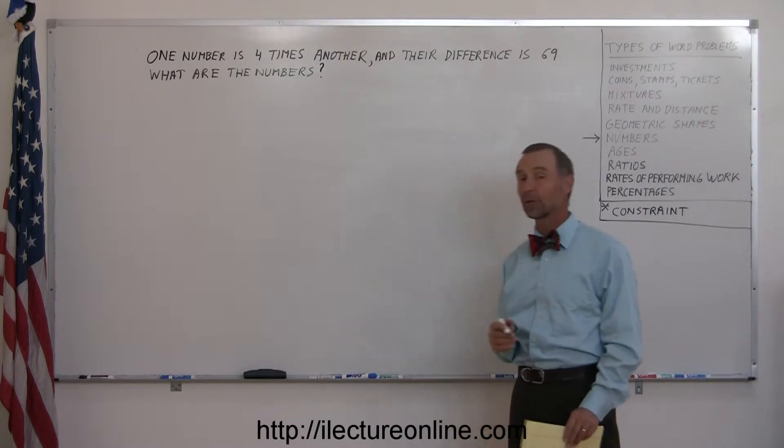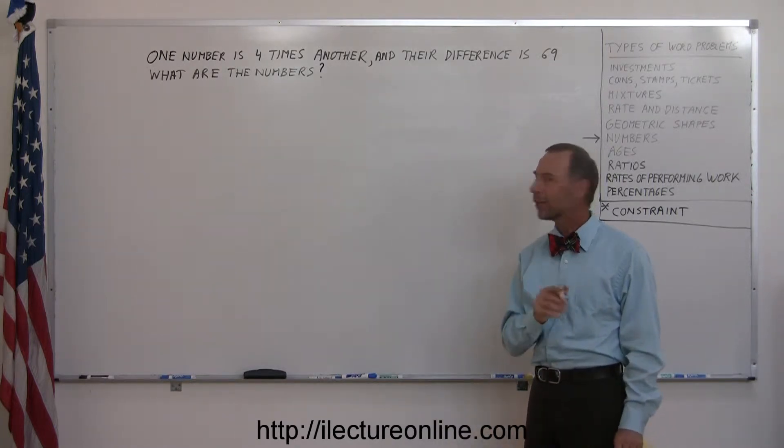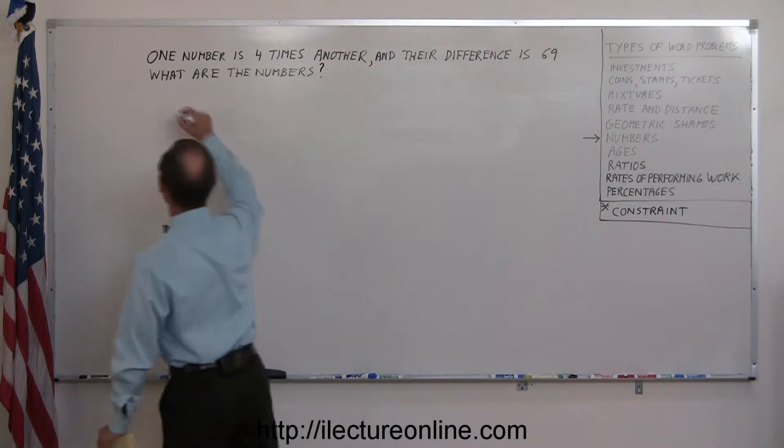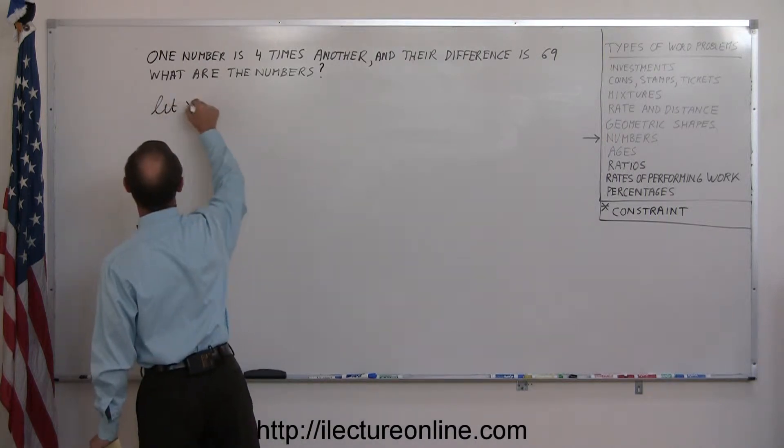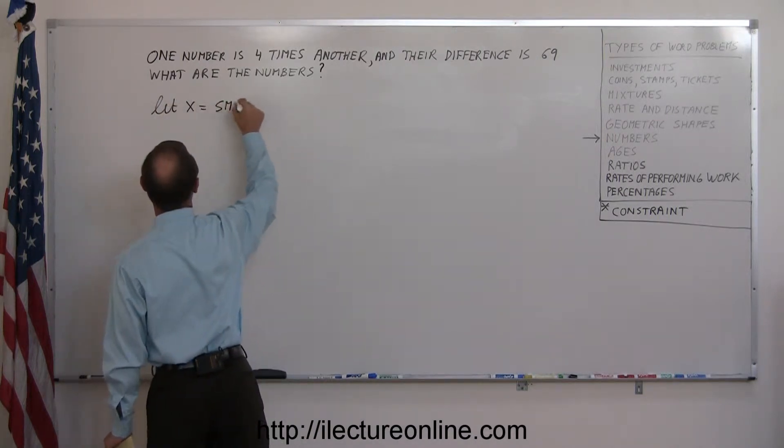So here we can assume we have two numbers. We're going to let x represent the smallest of the two. So let x equal the smallest of the two numbers.